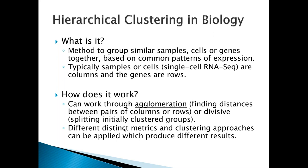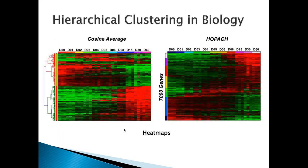Divisive methods split the data into smaller and smaller groups, but agglomerative methods are used most commonly. This is an example of hierarchical clustering of a single dataset with different algorithms. On the left is a standard hierarchical clustering approach where genes have been clustered — each row is a different gene — and you can see the dendrogram indicating gene relationships using a method called cosine average. On the right is a different, more complex algorithm called OPAC, which uses a somewhat different approach to find relationships between genes. You can get qualitatively different results from different clustering algorithms.